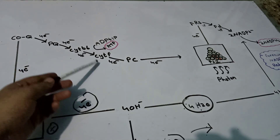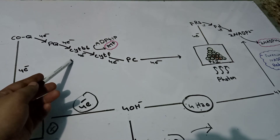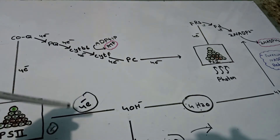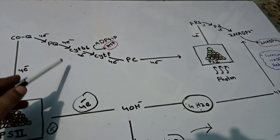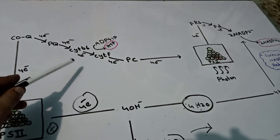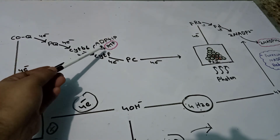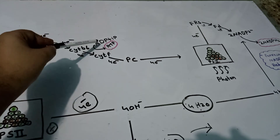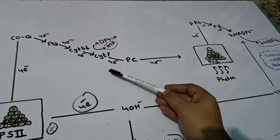The ejected electron is transferred through the electron transport chain to Cytochrome B6 and then to Cytochrome F complex. During the transfer of electrons from Cytochrome B6 to Cytochrome F, some energy is released, and that energy is utilized in the formation of ATP molecules — from ADP and inorganic phosphate.